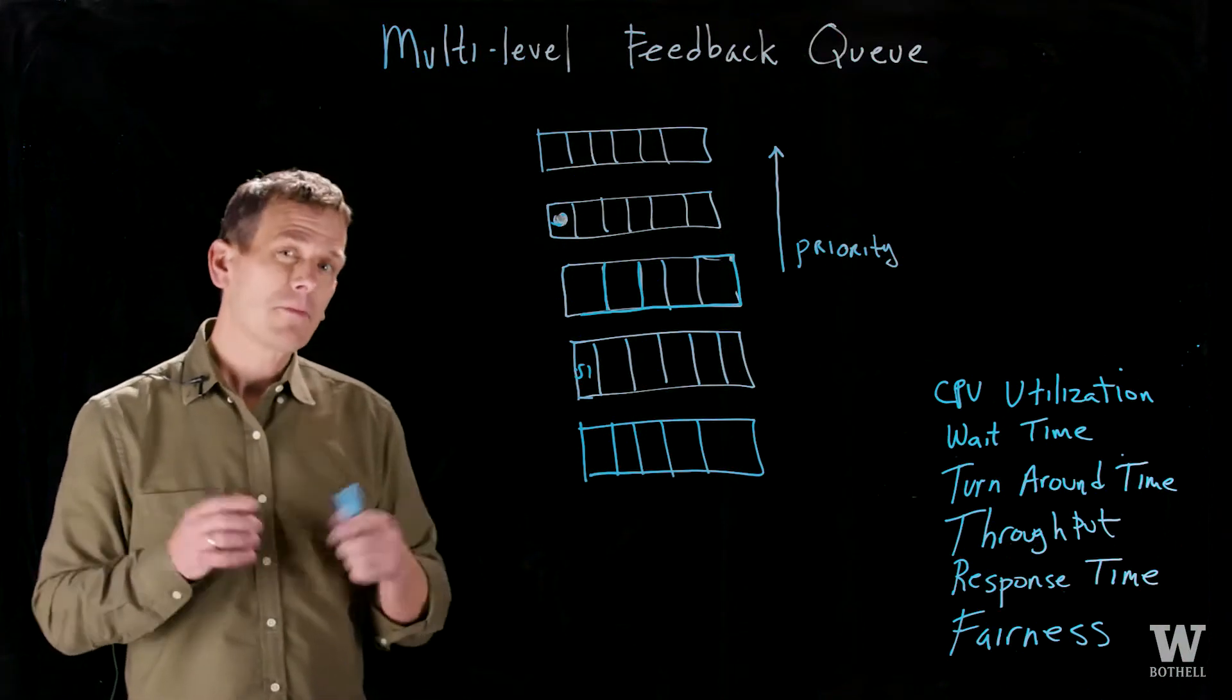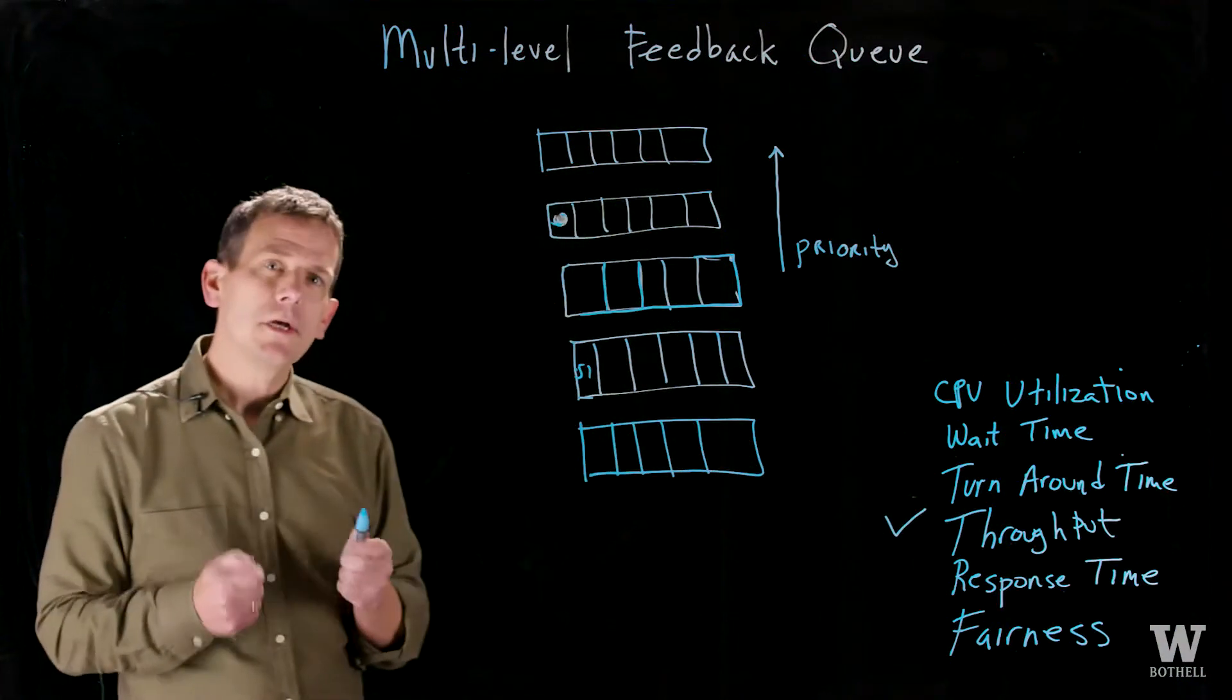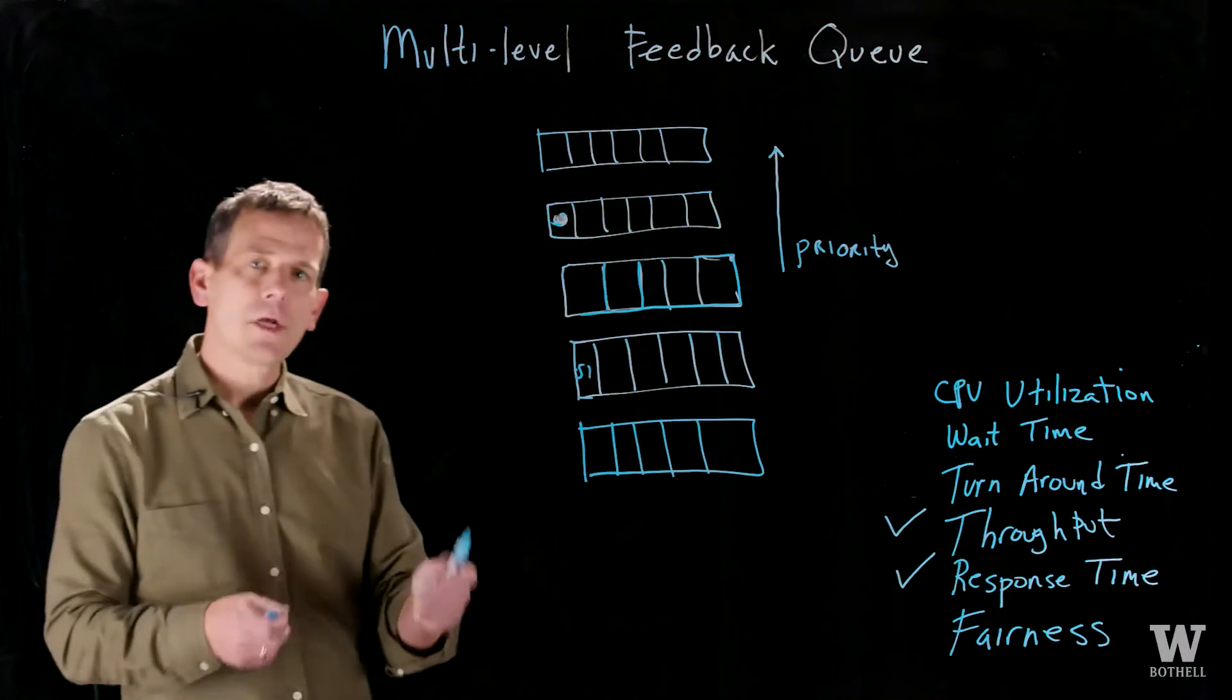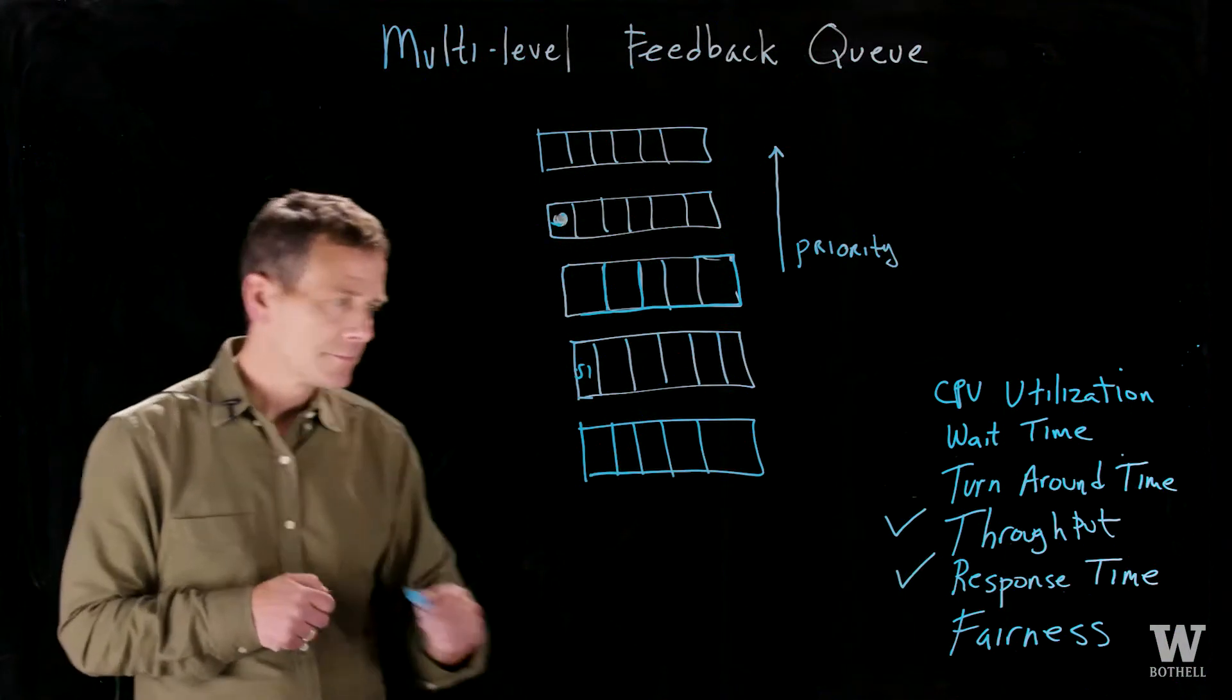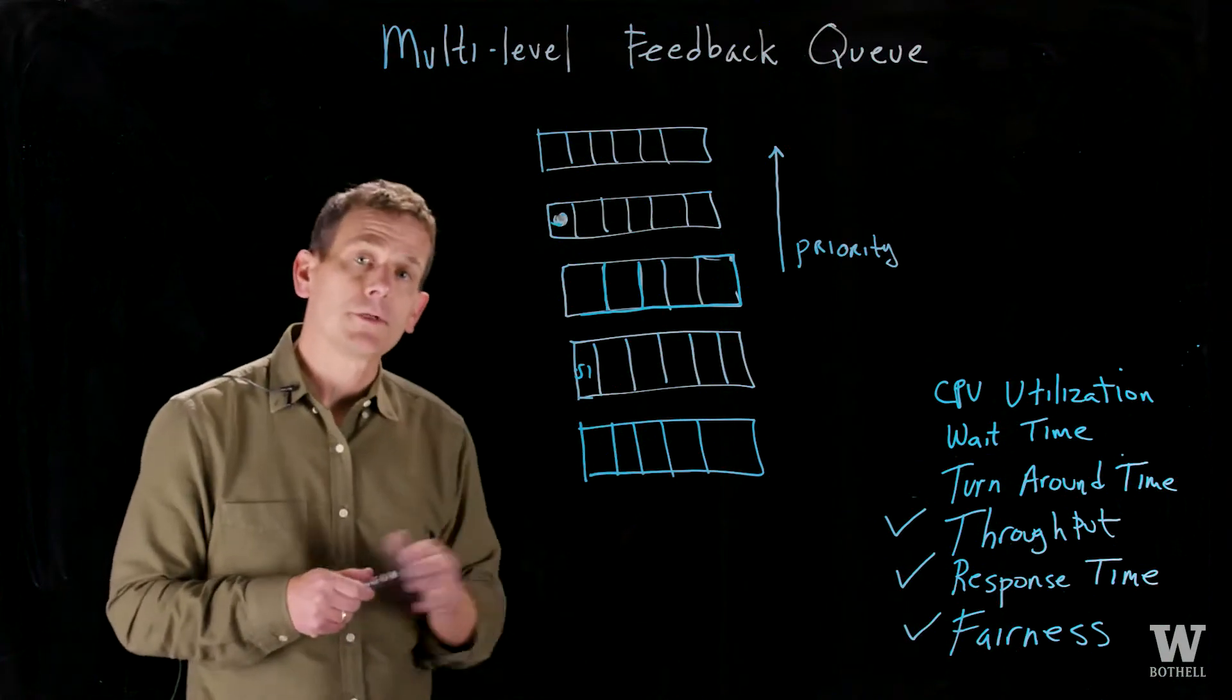All up, probably the three most important things are throughput, getting as much done in a unit time as possible, response time, making the job feel responsive to the user, and fairness, making sure that jobs don't starve over time.